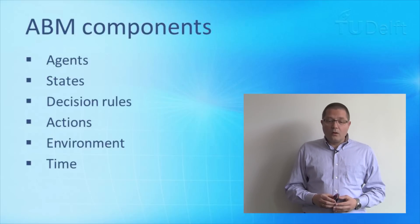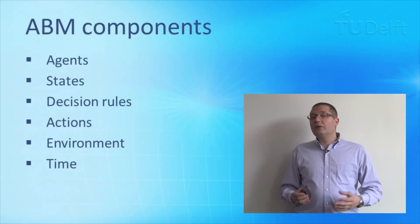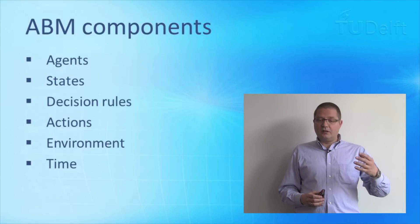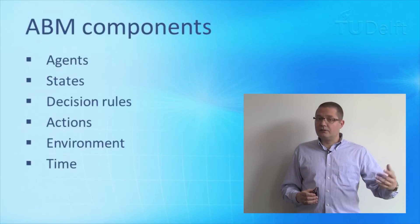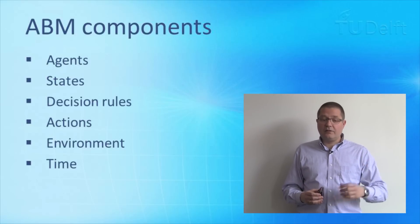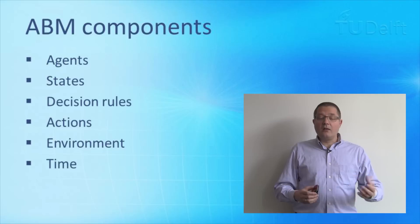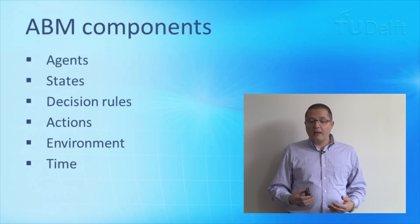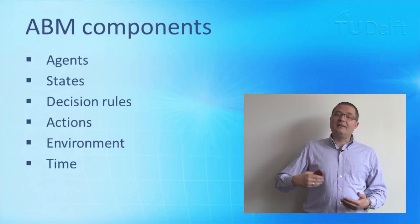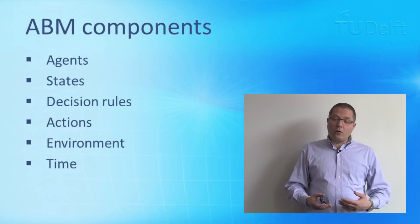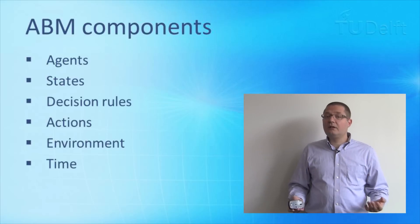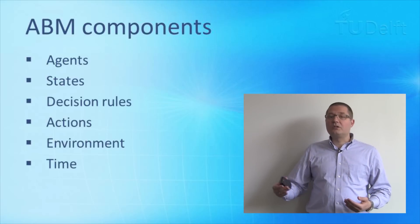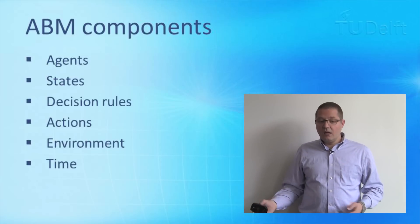The components of an agent-based model are: first, clearly, the agents themselves — the entities, the things. Then their states, their decision rules, the actions that they perform, the environment that they're in, and the time in which they exist.